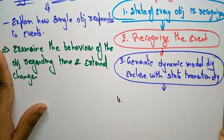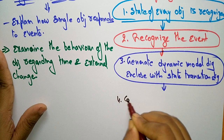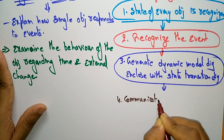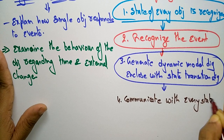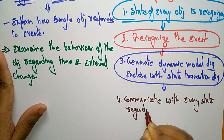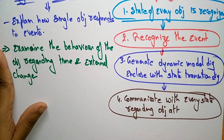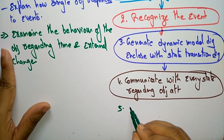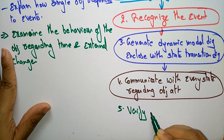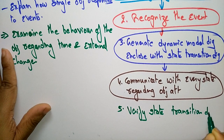The fourth step is, after generating the dynamic model diagram enclosed with the state transition diagram, you have to communicate with every state regarding the object attributes. The fifth step is to verify the state transition diagram.